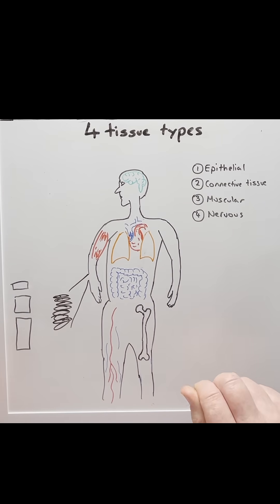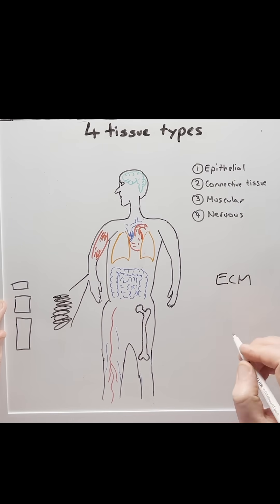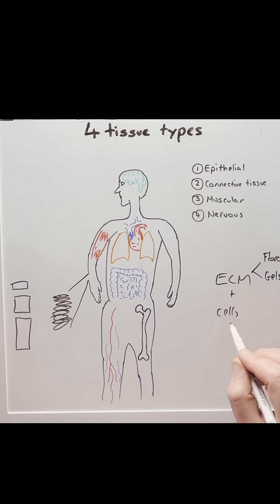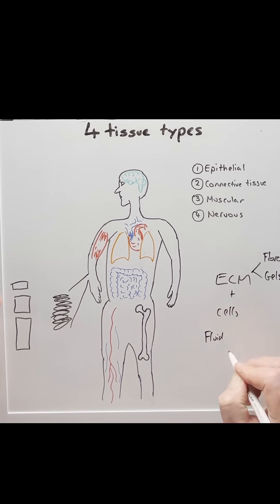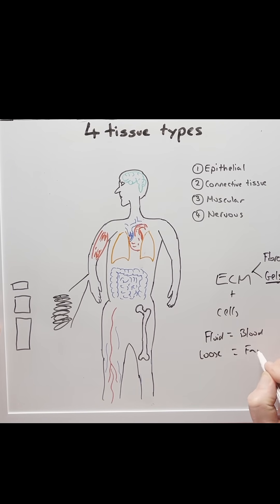Moving to connective tissue. Connective tissue consists of two main parts: an extracellular matrix, or ECM, and cells. The ECM is made up of fibres, such as collagen or elastin, and gels, like ground substance. It's the different density of these two components that will influence the type of connective tissue it is. For instance, if it's a fluid type, like blood; if it's semi-solid or gelatinous, this would be a loose connective tissue such as fat; but if it's a dense tissue with really compact fibres, this could be something like bones or ligaments.